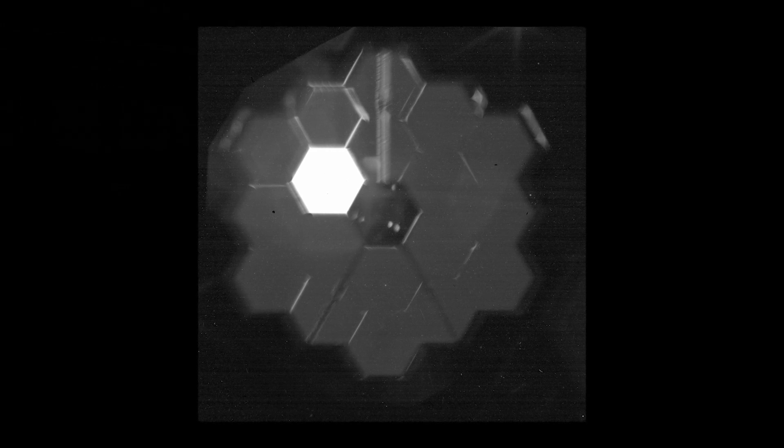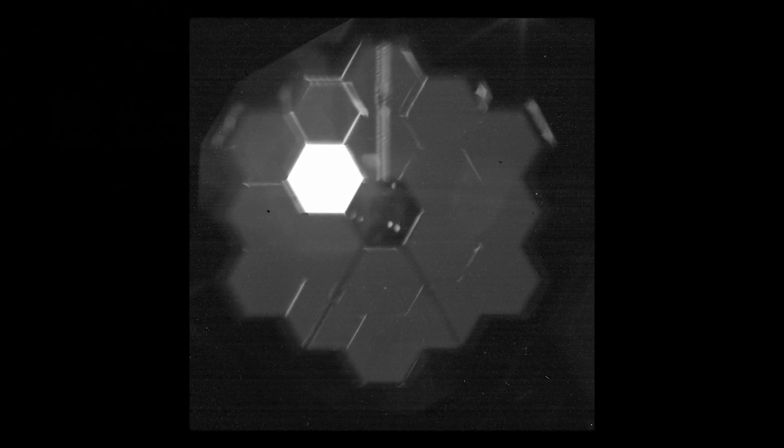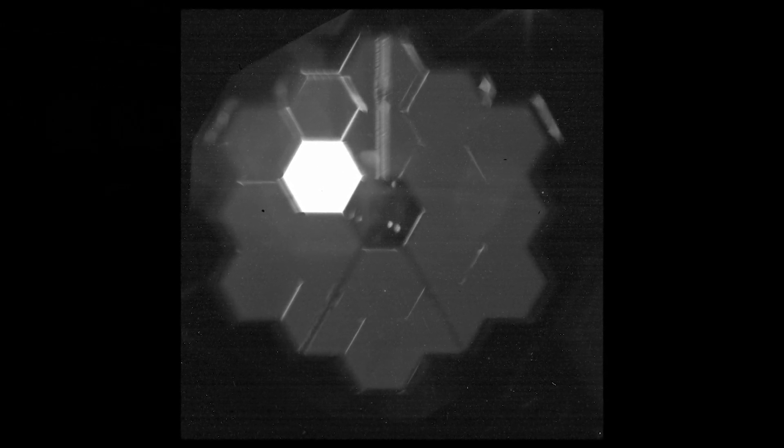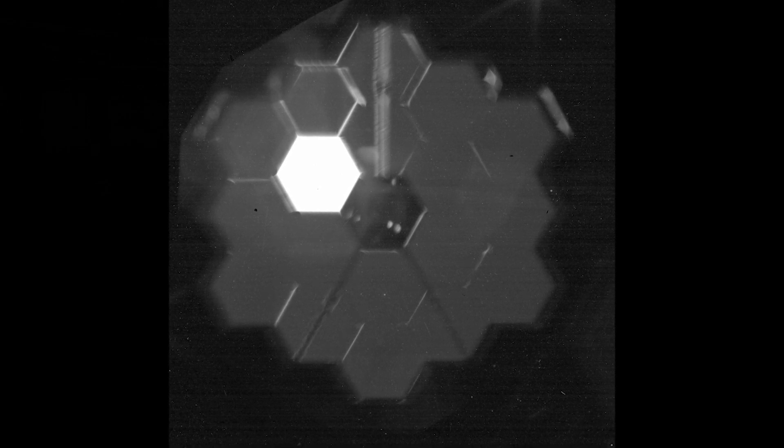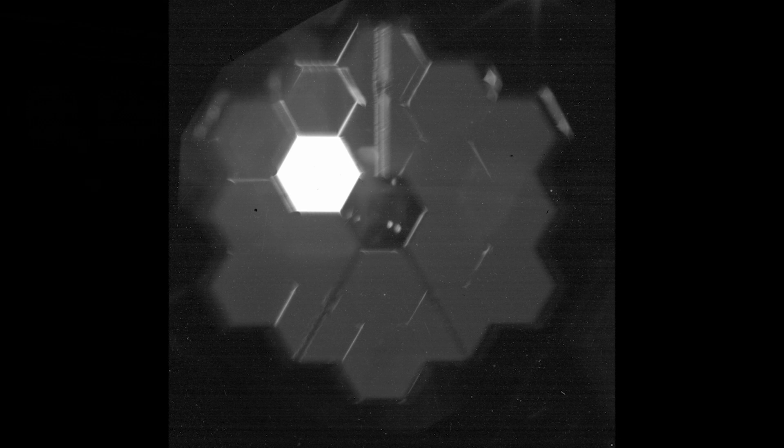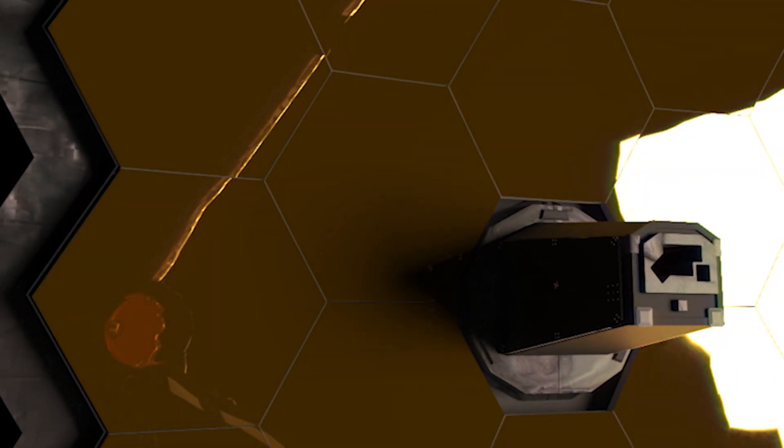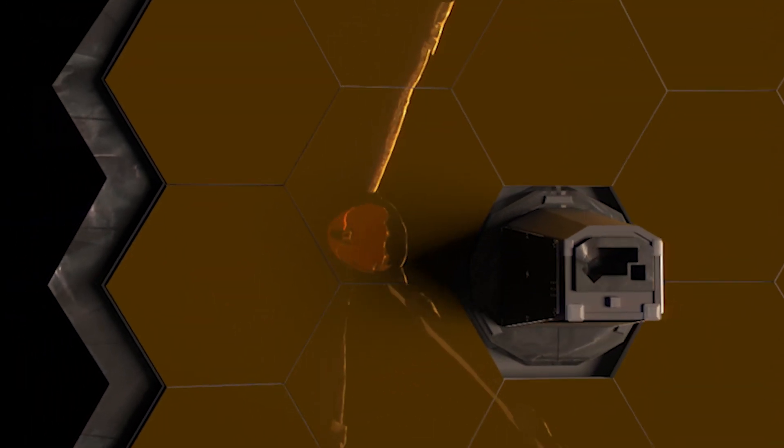In this particular case, one of the segments is pointing at a star, so that is the segment that lights up. But you can see the outline through the shadows of all 18 segments, and you also can see the outline of what's inside the instrument itself. We can see how well that primary mirror in the telescope is aligned to the instrument, and that gives us some initial confidence that the alignment looks good.